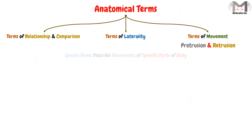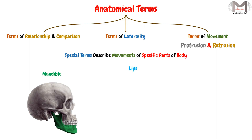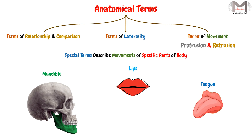The protrusion and the retrusion are special terms of movement that describe the movements of specific parts of the body, like the mandible, the lips, or the tongue, in which these structures will move forward and backward.